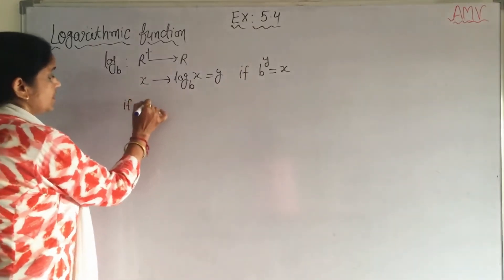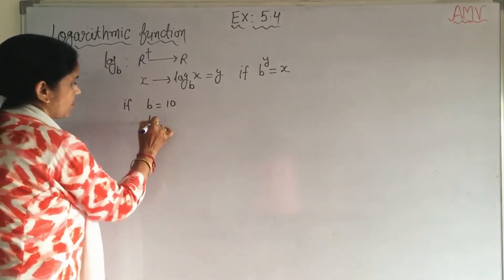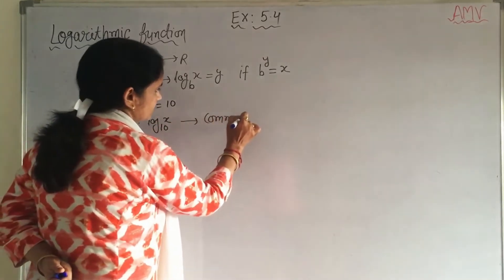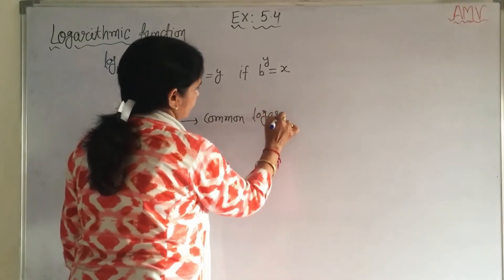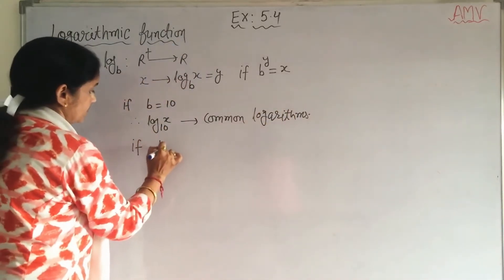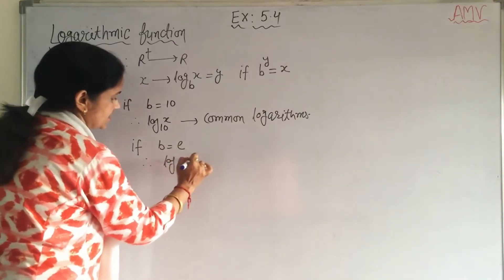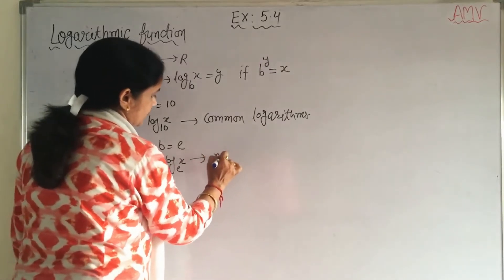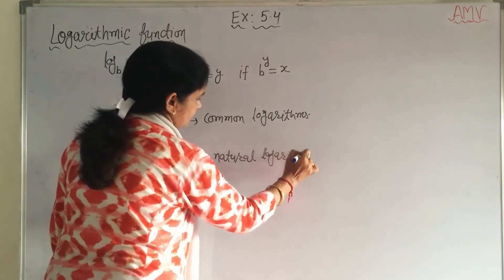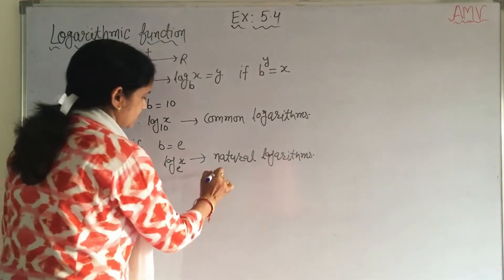If b is equal to 10, then it is log x base 10 — it is known as common logarithm. If b is equal to e, then it is log x base e — it is known as natural logarithm, generally written as ln.